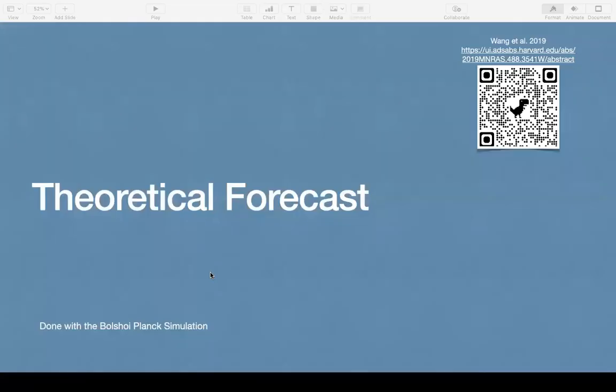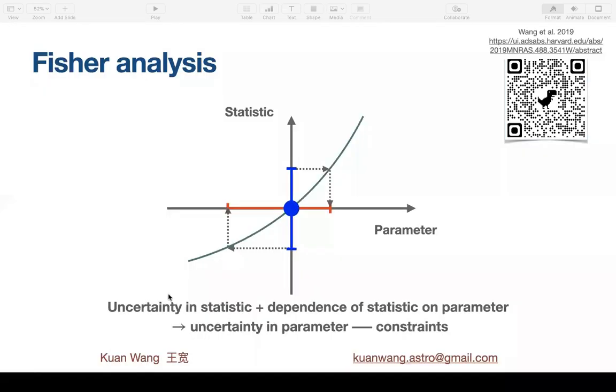So we first did a theoretical forecast to identify the best combination of the six. This work was published two years ago, and you're welcome to scan the code, which will lead you to the paper. So we did the forecast using a Fisher analysis. The idea of Fisher analysis is to take the uncertainty in the statistic and calculate the dependence of the statistic on the parameter, which will translate the uncertainty in the statistic into constraints on the model parameters.